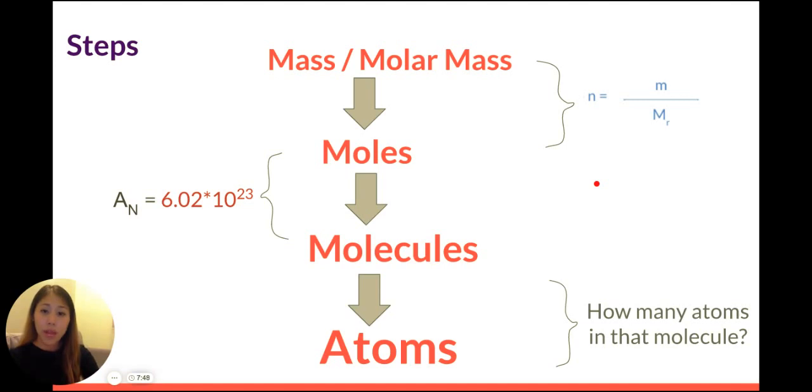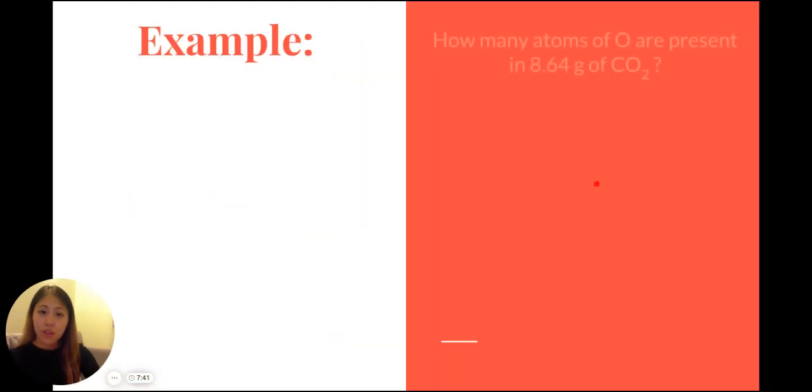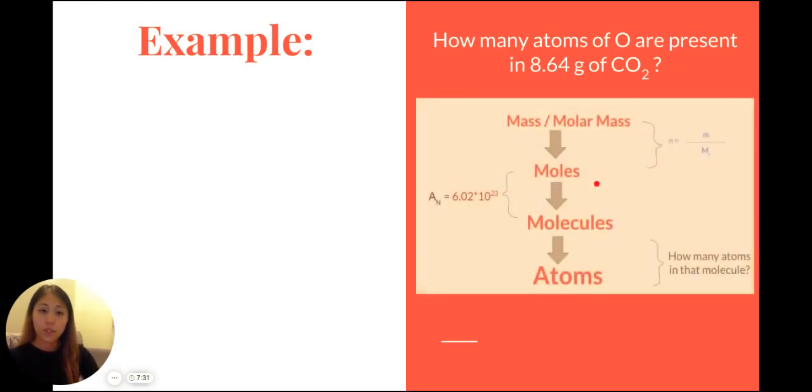So now let's combine everything that we know on this slide into a problem. Example: how many atoms of oxygen are present in 8.64 grams of carbon dioxide? So I'm going to leave this here for you. Take a pause and try to work this through yourself before revealing the solutions.